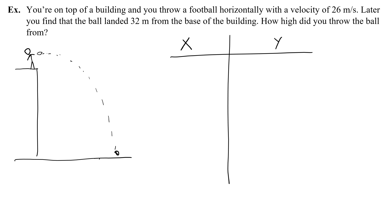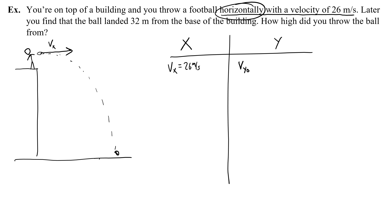Let's work with the numbers. A horizontal velocity of 26 meters per second — I'll draw that velocity and because it uses the word horizontal I need to write v sub x, which is an x component of velocity, and put that in my x column. So vx equals 26 meters per second. This also tells me that the initial y velocity, v_y0, is 0, because the ball was not thrown with any upward or downward component.